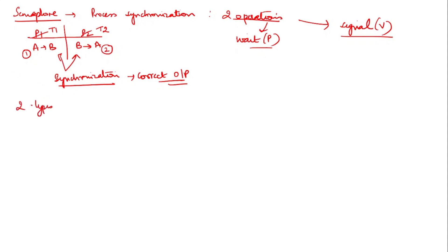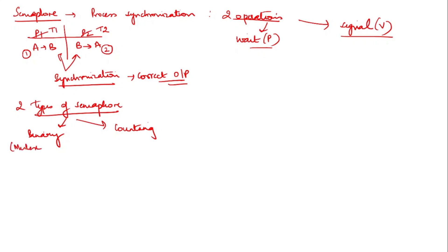There are two types of semaphores. The first is the binary semaphore, also known as the mutex lock. As the name implies, it can only have values 0 and 1. The second is the counting semaphore, which can range over an unrestricted domain — from minus infinity to plus infinity.